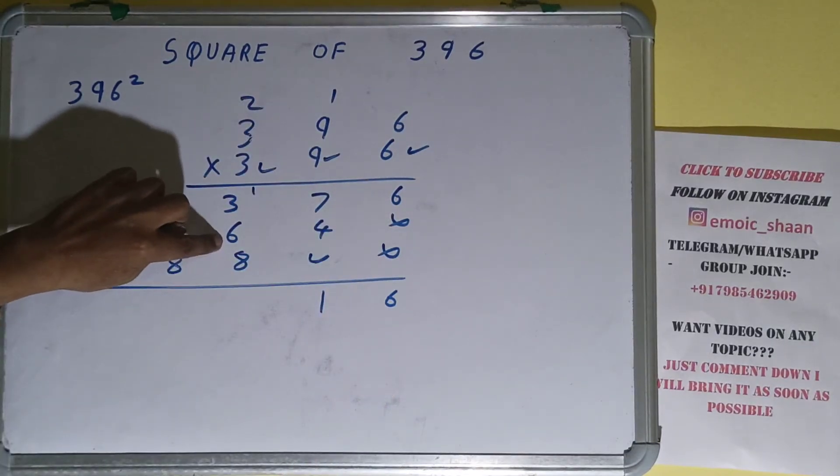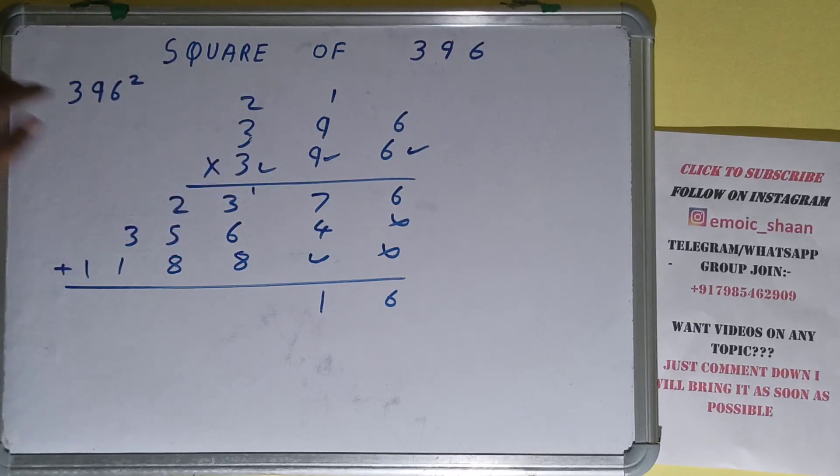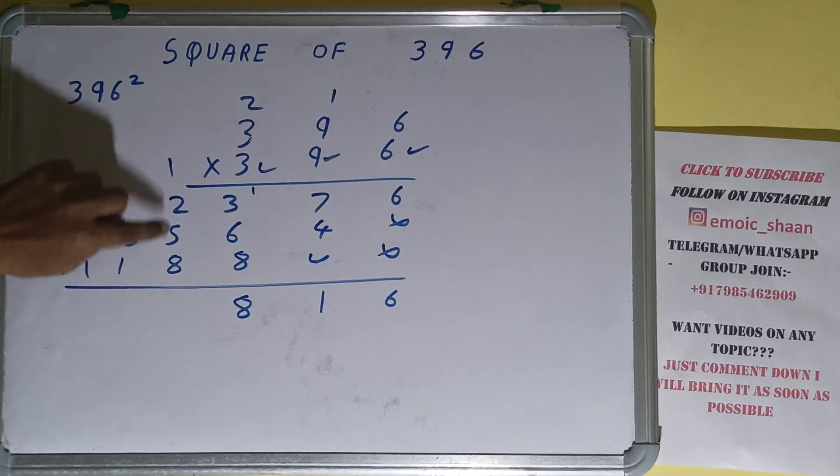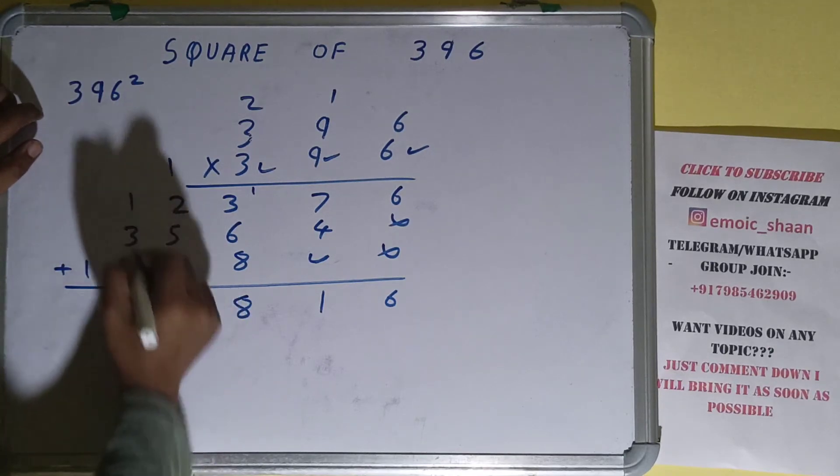8 plus 6: 14, 15, 16, 17, 18, 1 carry. 8 plus 5: 13, 14, 15, 16, 1 carry.